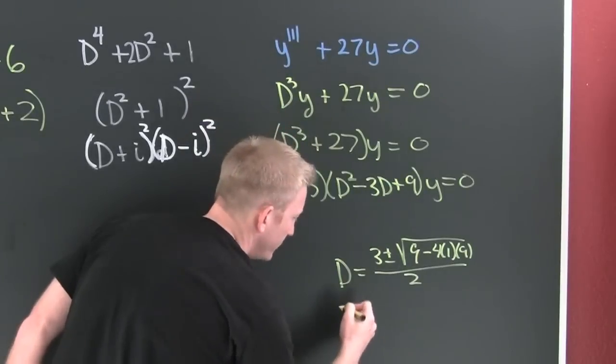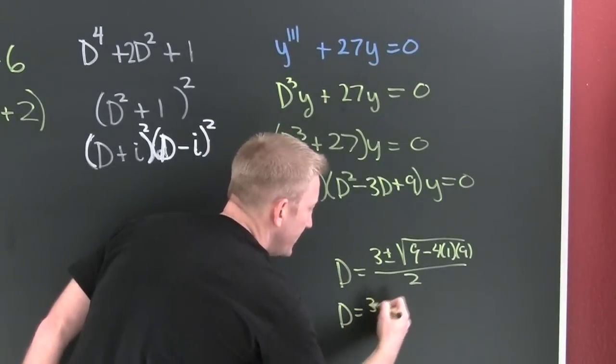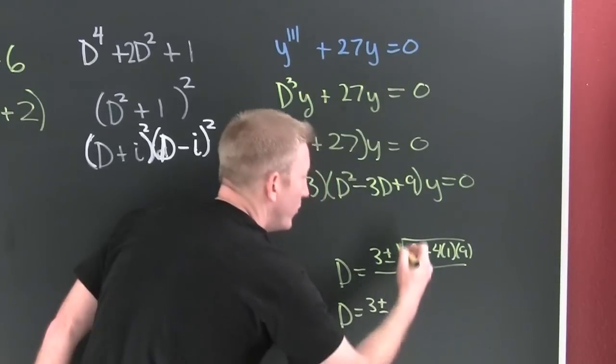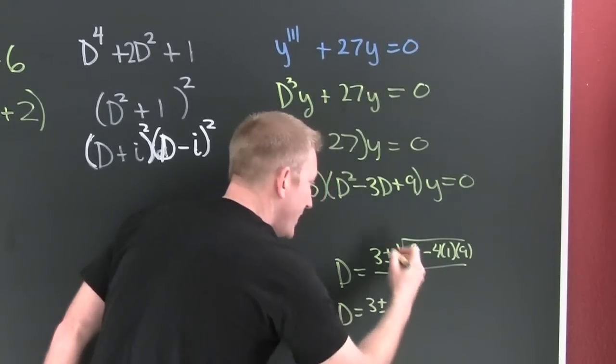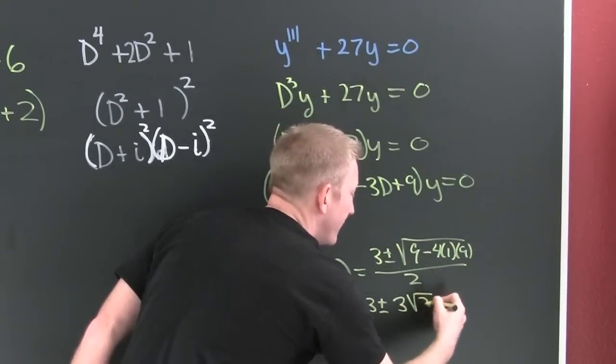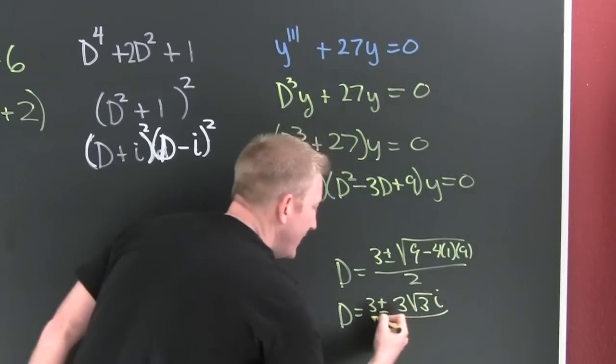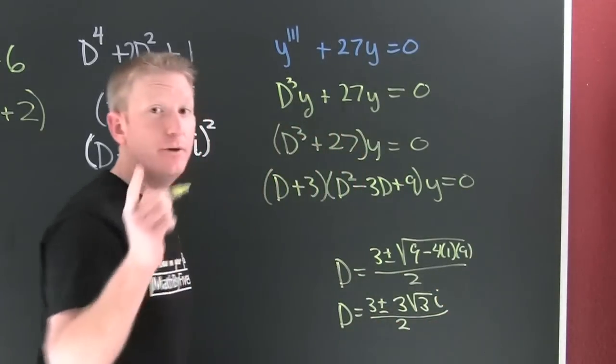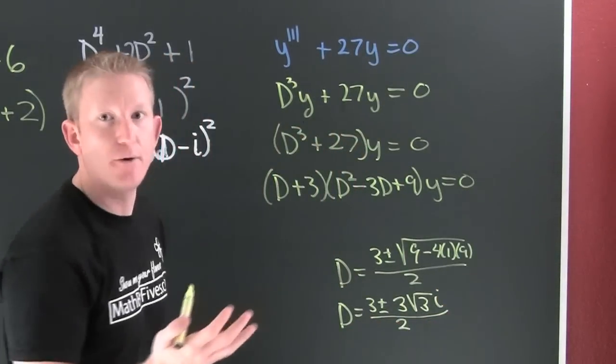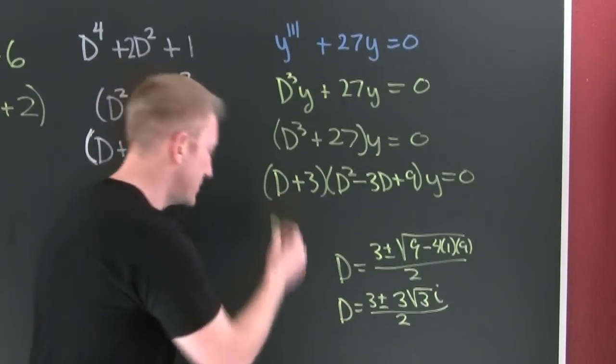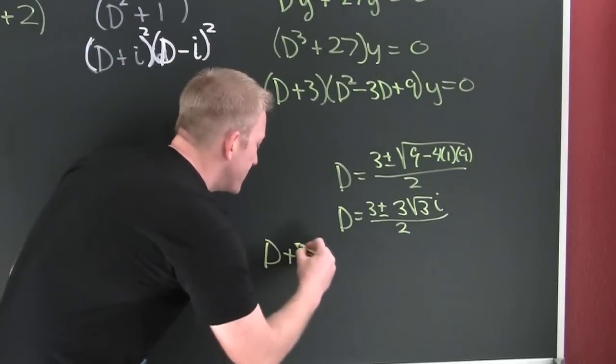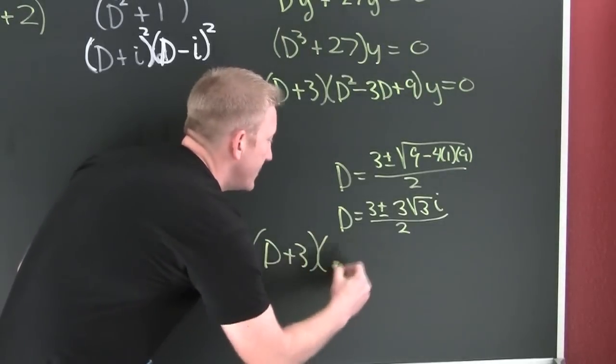Three roots of three. D is three plus and minus three and then square root of three i divided by two. Now the viewer should check that, right? Because I was just going off the cuff, I haven't seen these examples before.